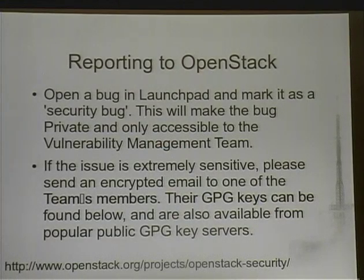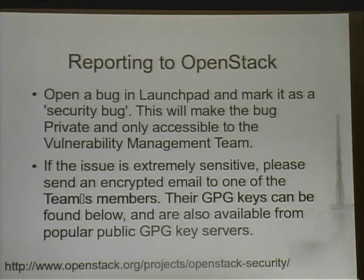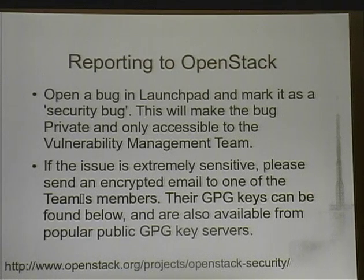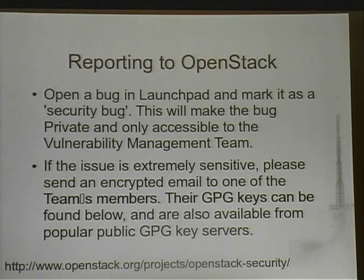There are two ways to report vulnerabilities in OpenStack: one is marking something as a security bug in Launchpad, which will go private immediately and allow a conversation with the vulnerability management team. If it's extremely sensitive, you can PGP-encrypt it and send it directly to the three vulnerability management team members — that URL contains the list of members, their email addresses, and links to their PGP keys.